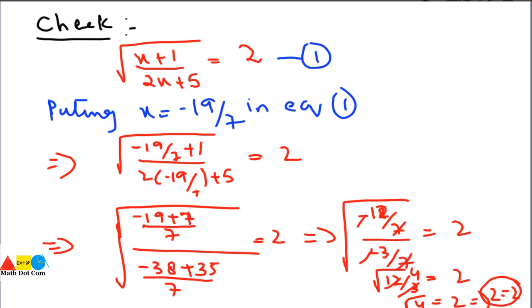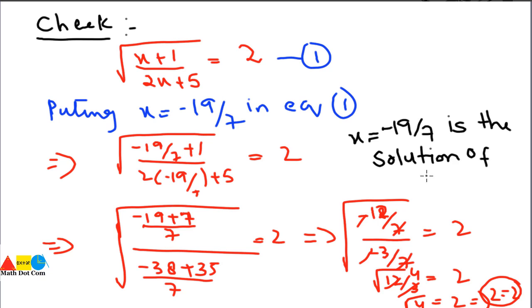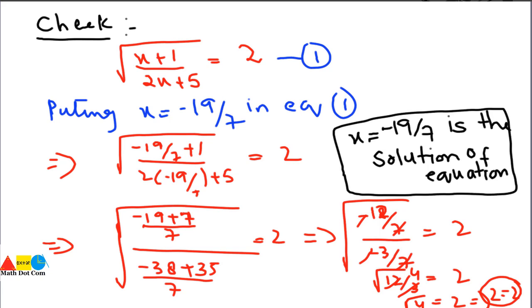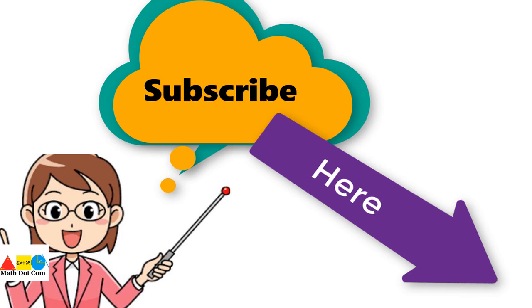Since left-hand side equals right-hand side, the value x = -19/7 is confirmed as the solution of the given equation. This is how we can find the solution of equations involving radicals with multiple variables and constants. Hope this will help you a lot. Thank you for watching — if you like this video, please subscribe to our channel Math Dot Com for more updates.